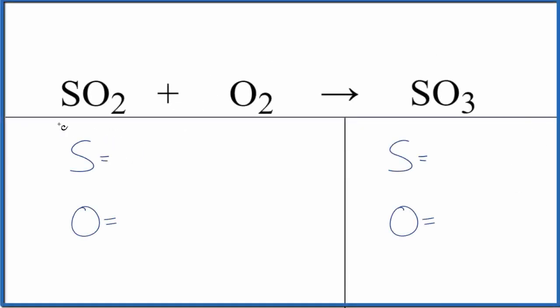Let's balance the chemical equation for SO2 plus O2 yields SO3. Sulfur dioxide plus oxygen gas gives us sulfur trioxide. We'll also look at the states and the type of reaction.